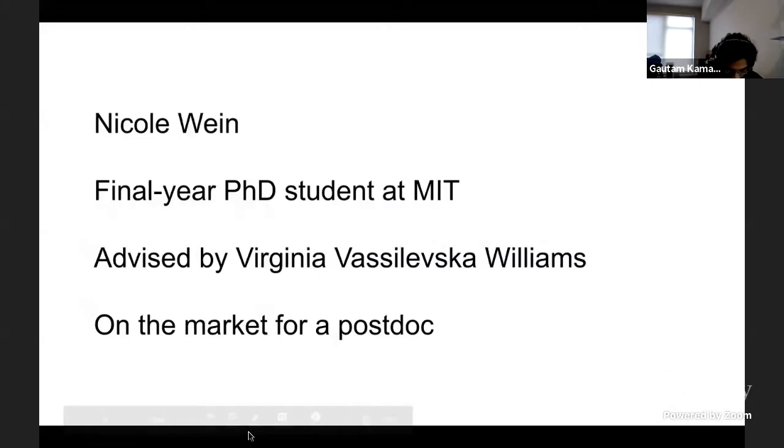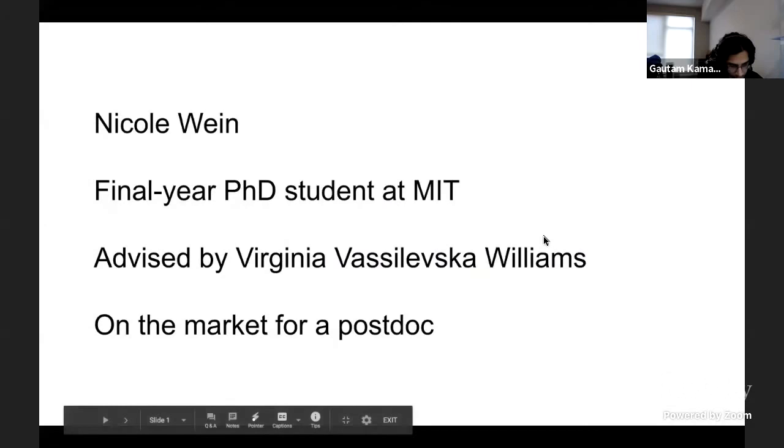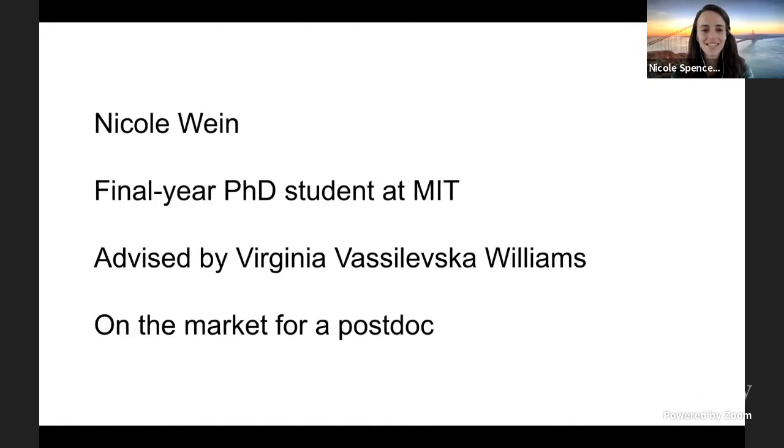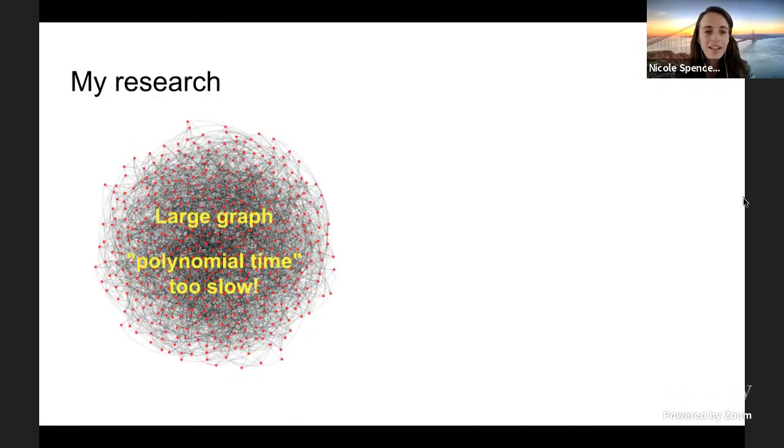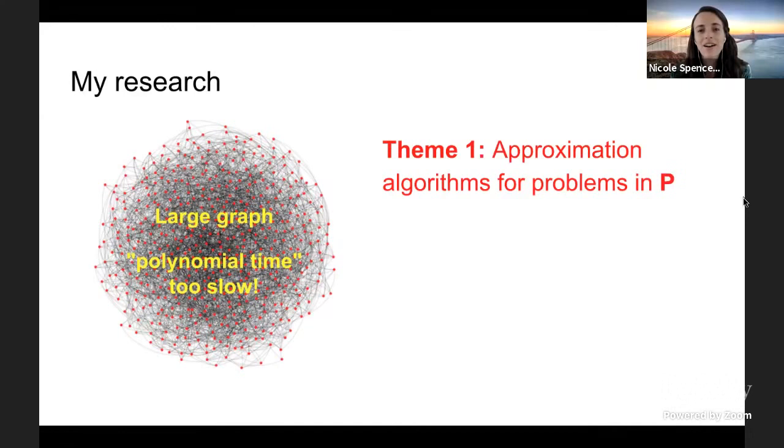Nicole? Nicole, are you there? Yep. Cool. Okay. Hi, everyone. I'm Nicole. I'm a final year PhD student at MIT. My advisor is Virginia Vasilevska-Williams, and I'm on the market for a postdoc. So in my research, we consider very large graphs. And what I mean by that is like, if you gave me an algorithm that runs in polynomial time, or even like cubic time or quadratic time, we could say, you know, this is going to be too slow for this very large graph. And so two themes of my research that fall under this idea are theme number one, approximation algorithms for problems in P.